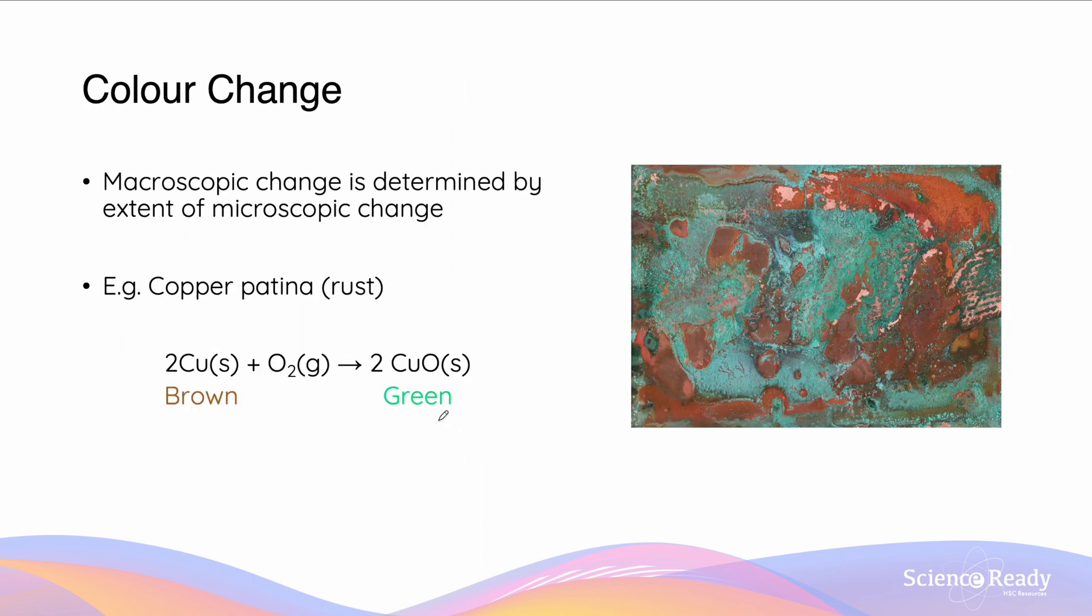Colour change is a simple concept which is as the name suggests. The reason why we observe a colour change as a macroscopic change is because the macroscopic change is going to be determined by the extent of the microscopic change. What does this mean? Well, let's have a look at an example here.